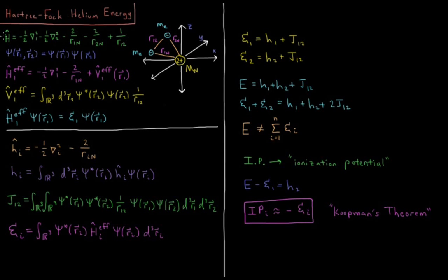Our total Hamiltonian in atomic units is the kinetic energy of electron 1 plus the kinetic energy of electron 2, plus the attraction of electron 1 to the nucleus, plus the attraction of electron 2 to the nucleus, plus the repulsion of the electrons from one another: minus one-half del-squared-1, minus one-half del-squared-2, minus 2/r1n, minus 2/r2n, plus 1/r12.